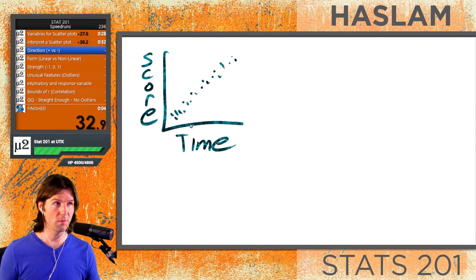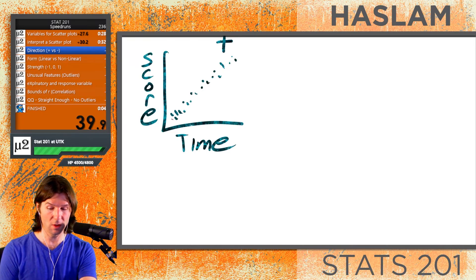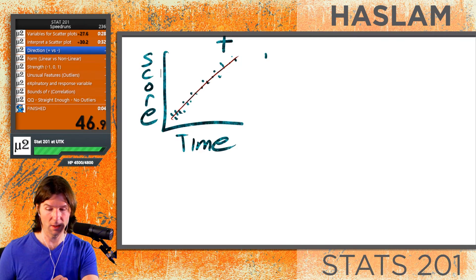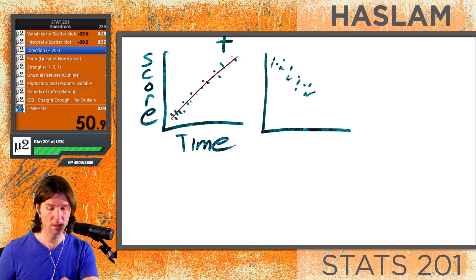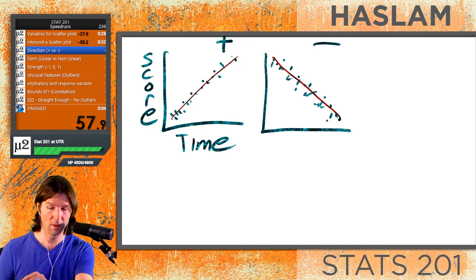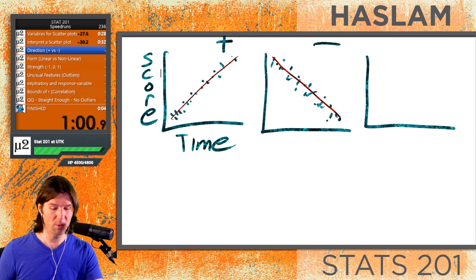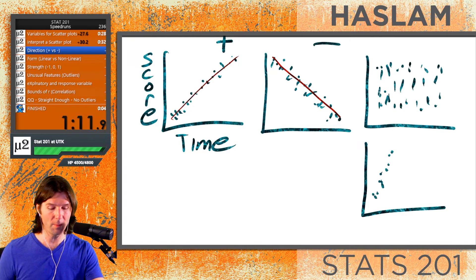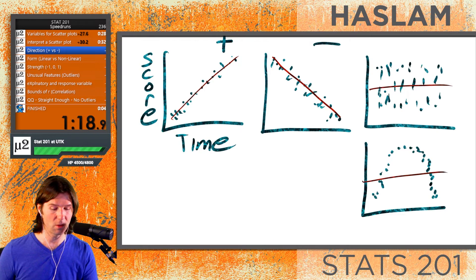The first thing to interpret in a scatter plot is direction. A positive direction goes upward, and a negative direction goes downward. A scatter plot that is neither positive nor negative includes ones showing no relationship — like a flat line through it — or a parabolic shape, which is not well described by a line.